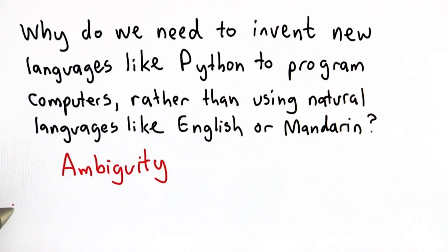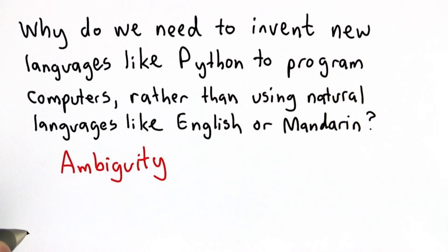So here's an example of the kinds of ambiguities that come up in natural languages like English, and we'll do this in the form of a quiz.